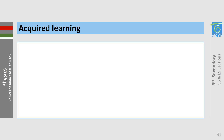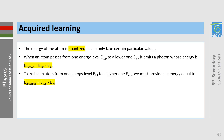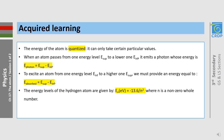What have we learned in this session? First, the energy of the atom is quantized — it can only take certain particular values. When an atom passes from a higher energy level E_superior to a lower one E_inferior, it emits a photon whose energy equals E_superior minus E_inferior. To excite an atom from E_inferior to E_superior, we must provide energy equal to E_superior minus E_inferior. The energy levels of the hydrogen atom are given by EN in electron volt equals minus 13.6 over N squared, where N is a non-zero whole number.